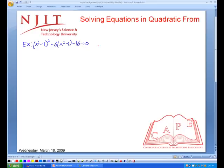So let u equal x squared minus 1. Then by substituting in we see that u squared minus 6u minus 16 equals 0.